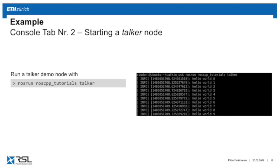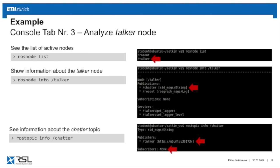Now open console number three to look at what's happening in your system. By typing rosnode list you should see the node you just started. If you type rosnode info /talker, you'll see that the talker node publishes on the topic /chatter with type string. This node also outputs to your console, but it also provides a ROS topic called /chatter where the same information is published.